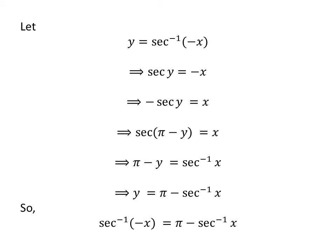We had assumed y is equal to arc secant of minus x. So, arc secant of minus x is equal to π minus arc secant of x. The identity is proved.